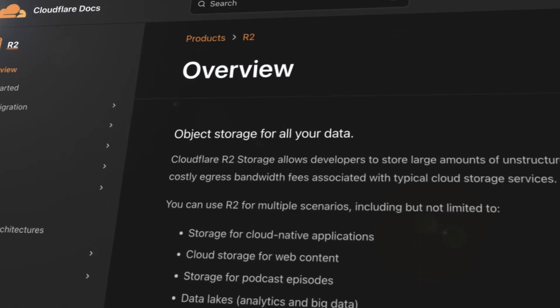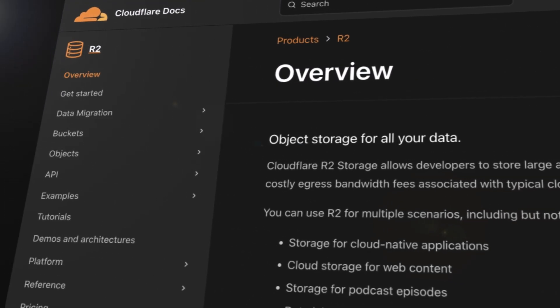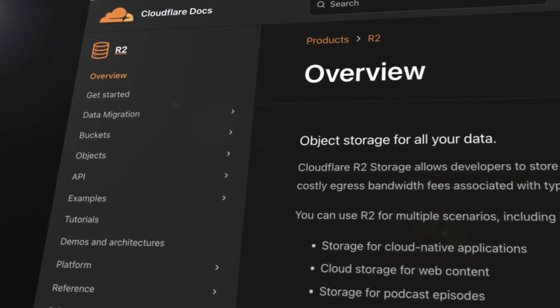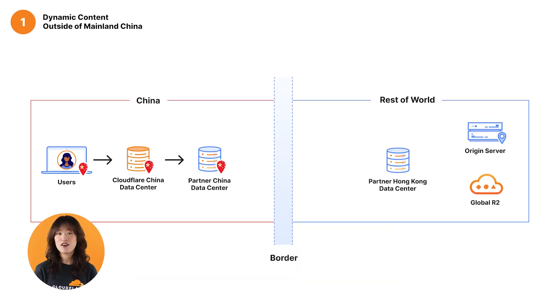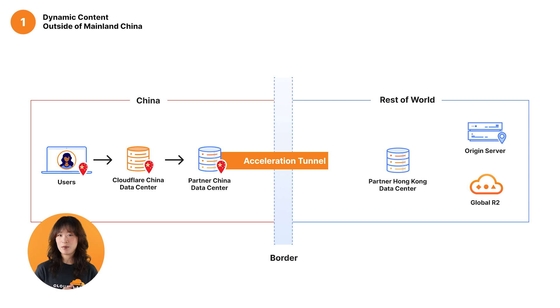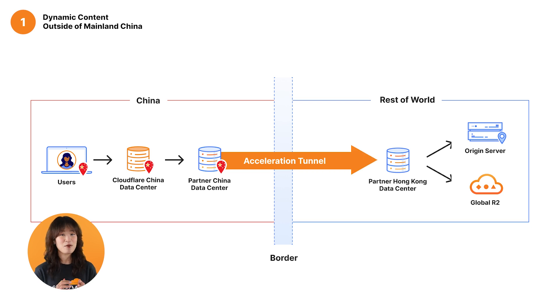For example, customers using Cloudflare SaaS features like R2 for asset storage can integrate these capabilities into our solutions seamlessly. Once processed, the traffic is transferred through our partner's dedicated private tunnel to the global public internet, ensuring high performance and reliability.